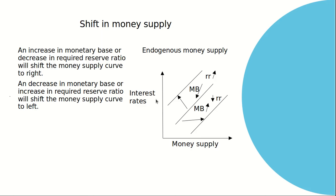Shift in endogenous money supply. When there is an increase in the monetary base and a decrease in the required reserve ratio, there will be a rightward shift. As discussed previously, when there is a decrease in the required reserve ratio, there will be an increase in the money multiplier and money supply will increase, producing a rightward shift. When there is a decrease in the monetary base and the required reserve ratio increases, there will be a leftward shift in the money supply curve.